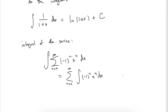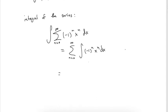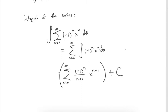The integral of x^n is (1/(n+1)) x^(n+1), and (-1)^n is just a constant that stays. So we end up with the sum from n=0 to infinity of (-1)^n / (n+1) times x^(n+1), plus a constant C. The C is not part of the sum — it's just one single constant.